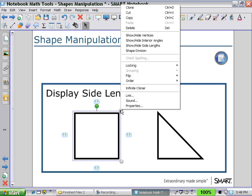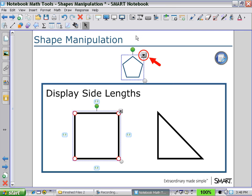Selecting for vertices, showing and hiding the vertices, we can now drag a vertex. And you can see that the side lengths recalculate.